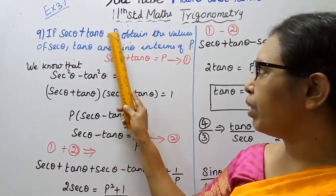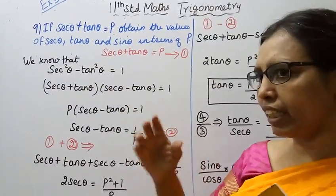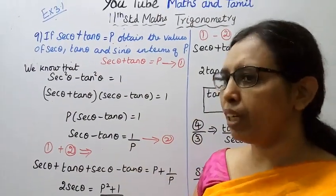Sec θ plus tan θ equals p is given. We need to find sec θ separately, tan θ separately, sin θ separately in terms of p.